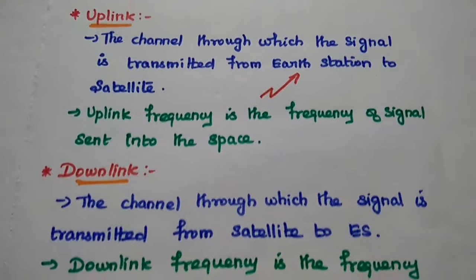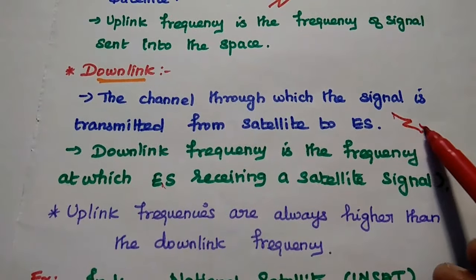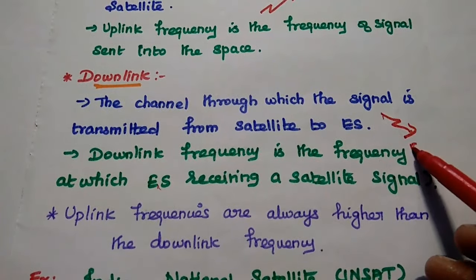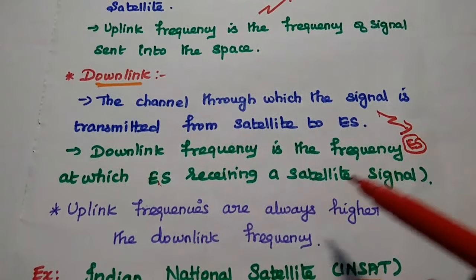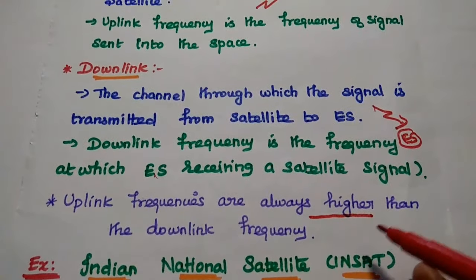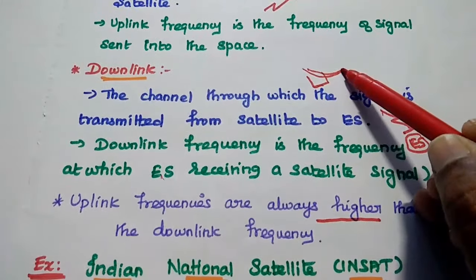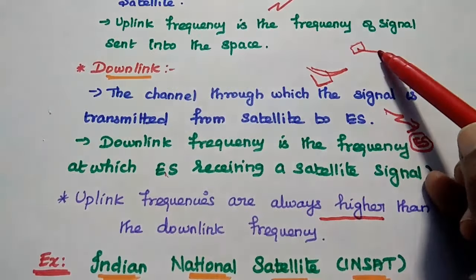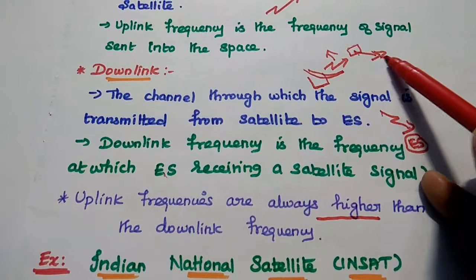The downlink is the channel through which the signal is transmitted from satellite to earth station. The downlink frequency is the frequency at which the earth station receives the signal from the satellite. We have to ensure that the uplink frequencies are always higher than the downlink frequency, because we have the provisions at the ground station to transmit a very high frequency range, but in space the satellite doesn't have that much provision to send high frequency signals.